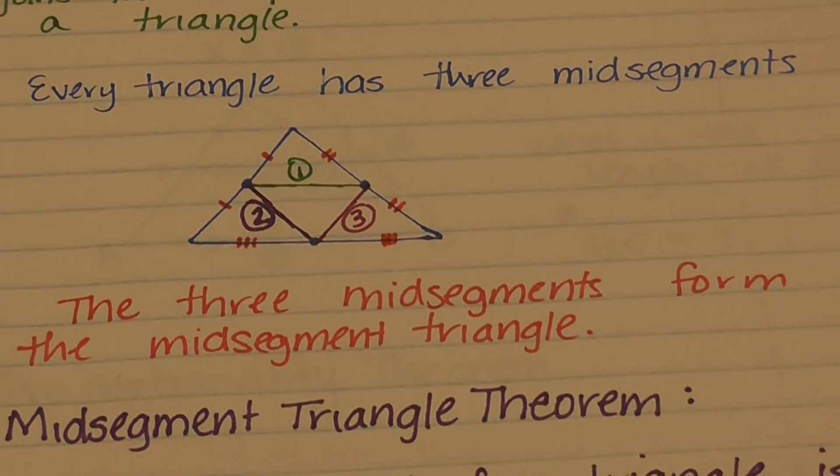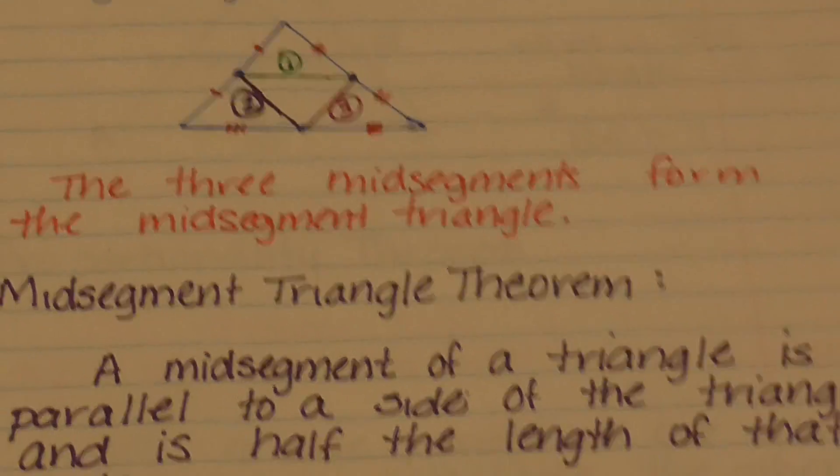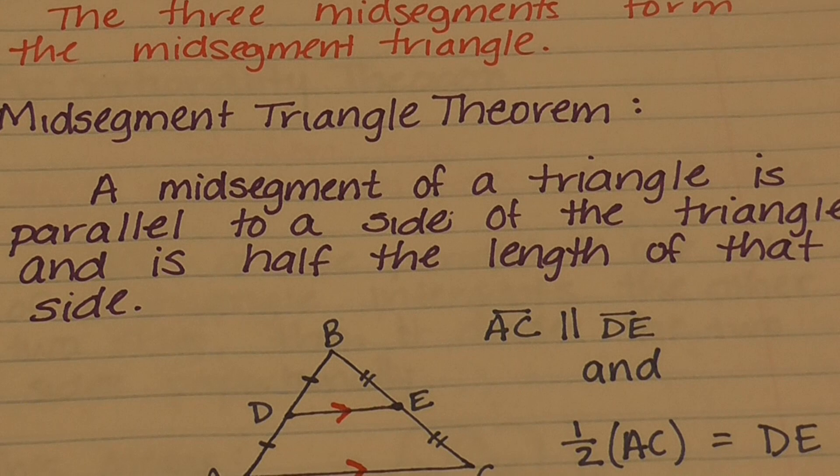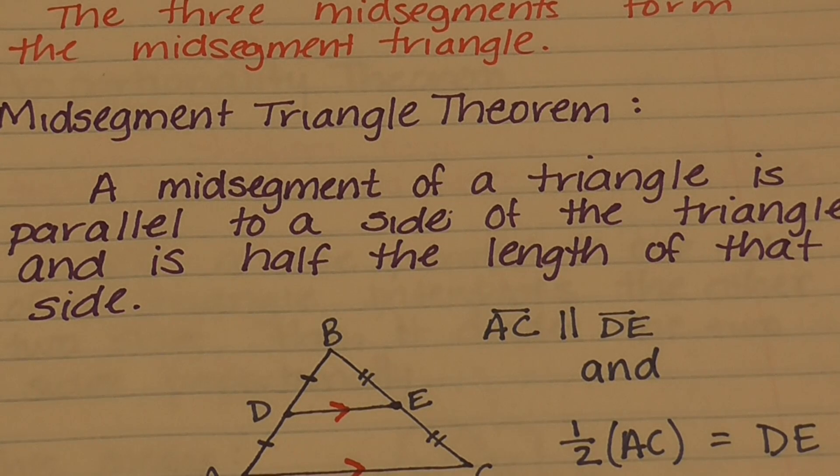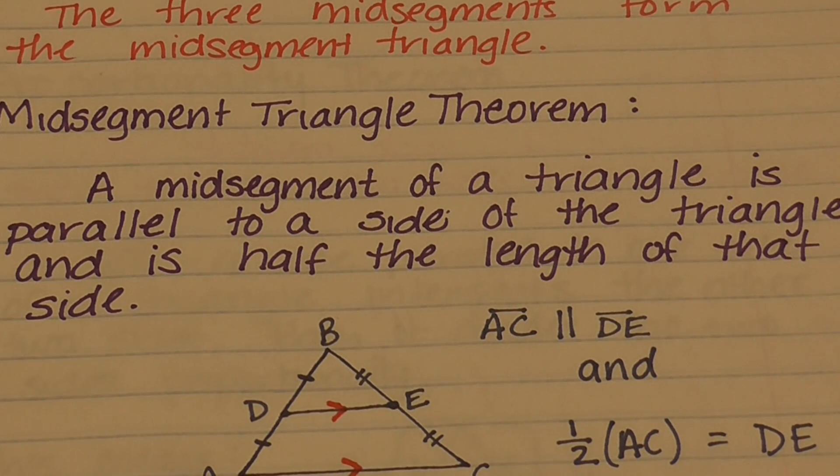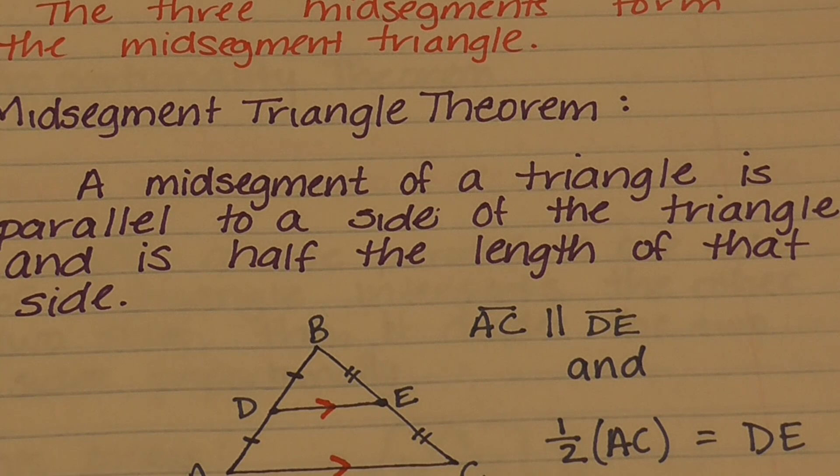Now that we know what a mid-segment is, let's talk about the mid-segment triangle theorem. The mid-segment triangle theorem states that a mid-segment of a triangle is parallel to the side of the triangle and is half the length of that side.